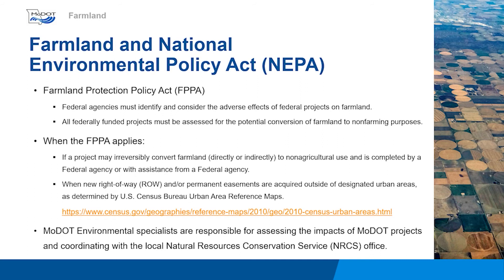The Farmland Protection Policy Act requires that federal agencies identify and consider adverse effects to farmland that have resulted from projects that involve federal participation. For most projects, the federal participation is federal funding. When a MoDOT project has new right-of-way and/or permanent easements that result in converting farmland to another land use, coordination with a local National Resources Conservation Service, or NRCS, office is required.